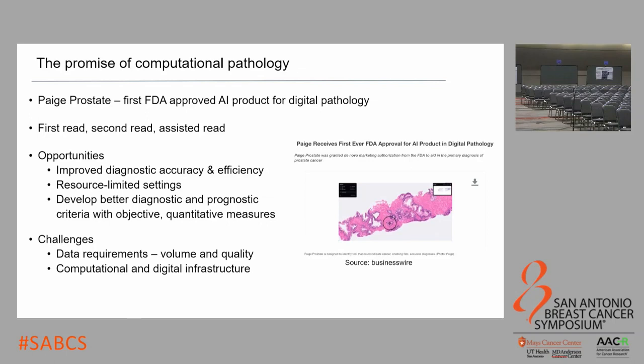Breast cancer is going to be an area of intense focus given the relevance of histology and the volume of breast cancer cases our labs deal with. These technologies can be applied in a first-read manner where they're pre-screening cases and some pathologists will never read any of those cases. They can be applied in a second-read fashion where the pathologist and the technology read the case in parallel, and if there's a discrepancy, those cases are flagged for review. There's also an assisted read approach that provides a suite of tools that do things like scoring tubules or mitosis count. The opportunities for this technology are improved diagnostic accuracy and efficiency, hopefully allowing pathologists to spend more time on interesting rather than routine cases.